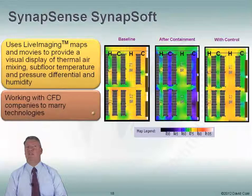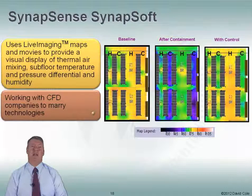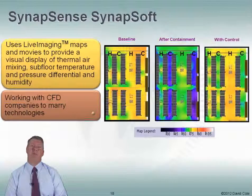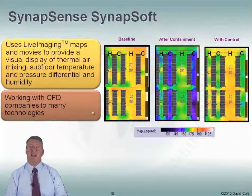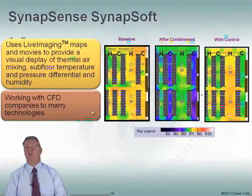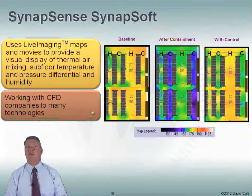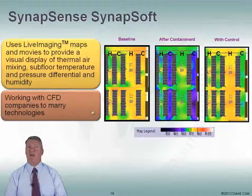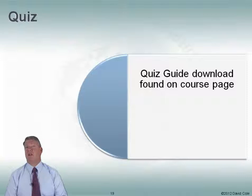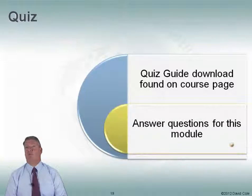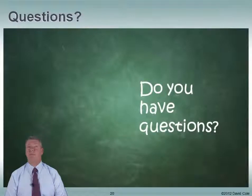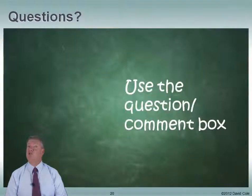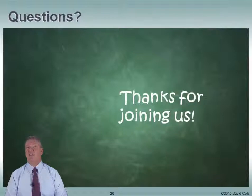They are also working with CFD — computational fluid dynamics — companies to marry those technologies. When you run a CFD model, one of the first things you need to do is validate the data: what is the temperature here, what is the airflow there? Synapsense can talk to the CFD model and say, 'the temperature readings I have here, here, and here are these values,' and then the CFD tool can confirm that the model is validated. There's a quiz on this topic on the courses page. If you have any specific questions about anything we've covered in this module, please use the question and comment box. Thank you very much for joining us on this module.